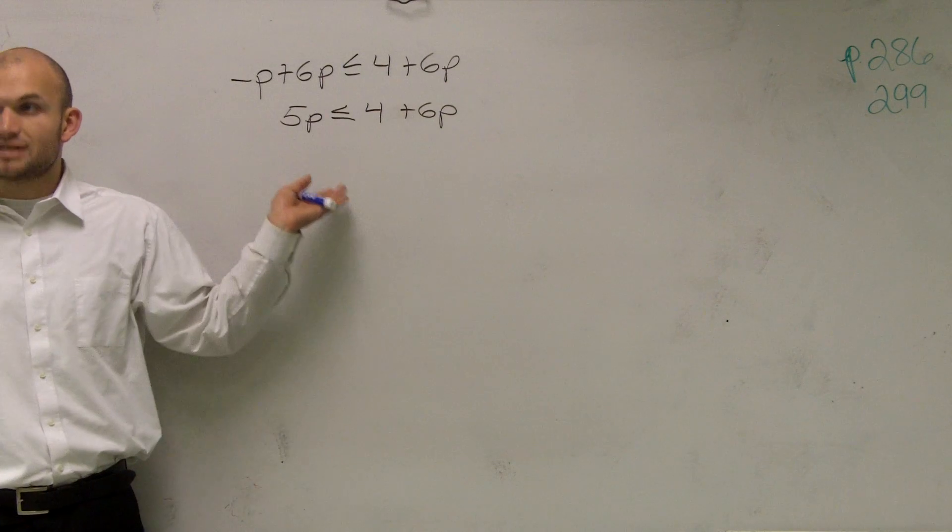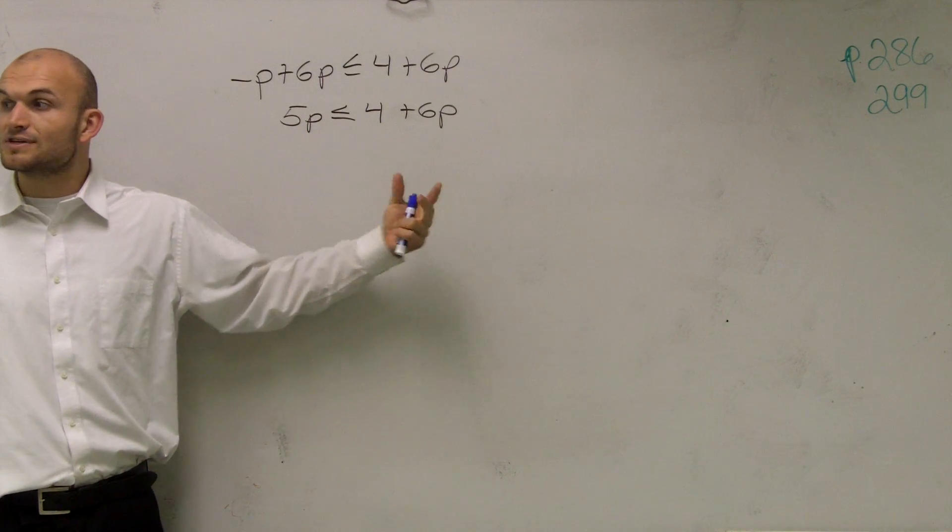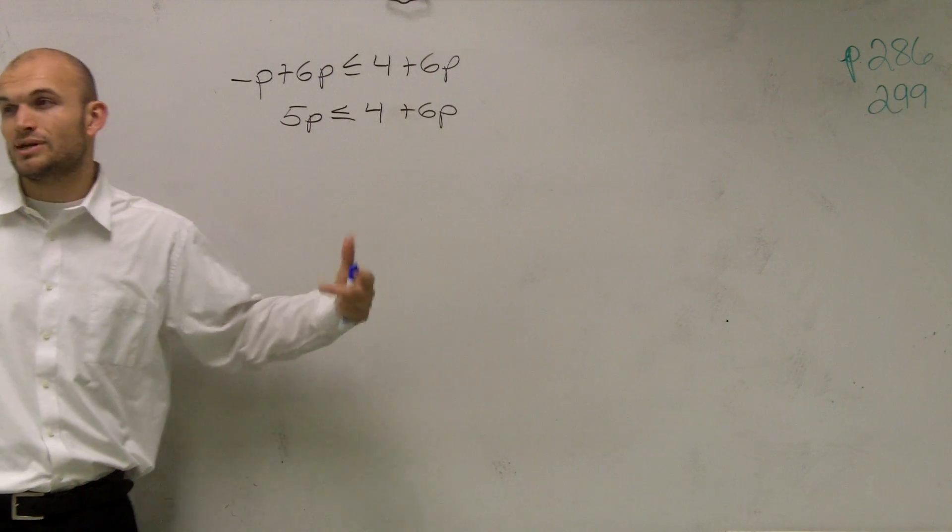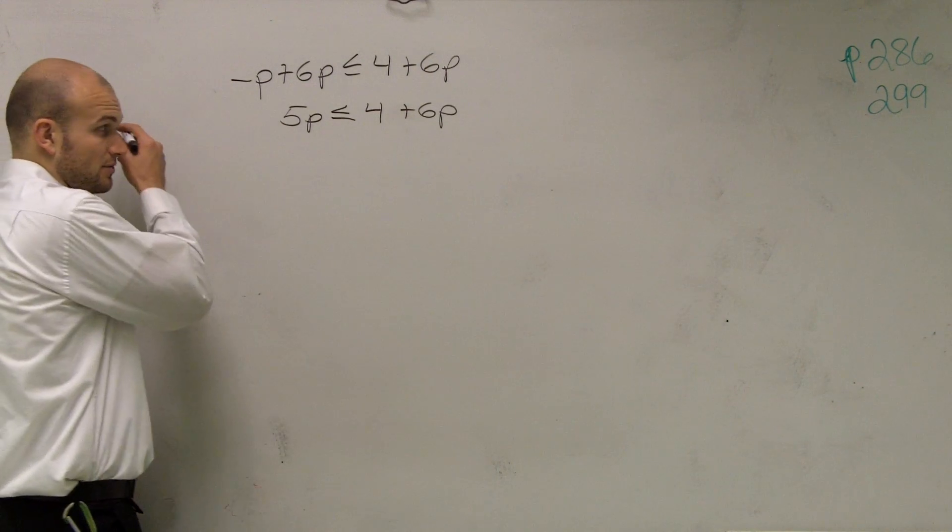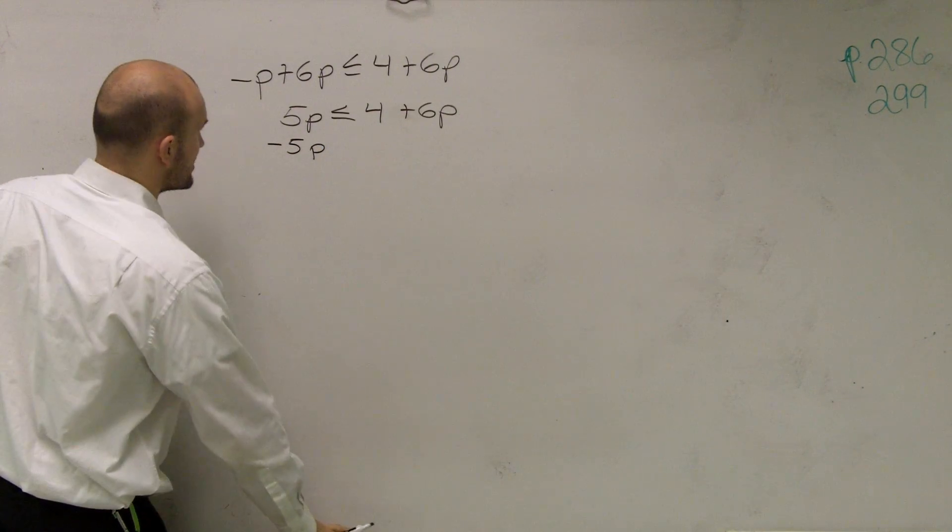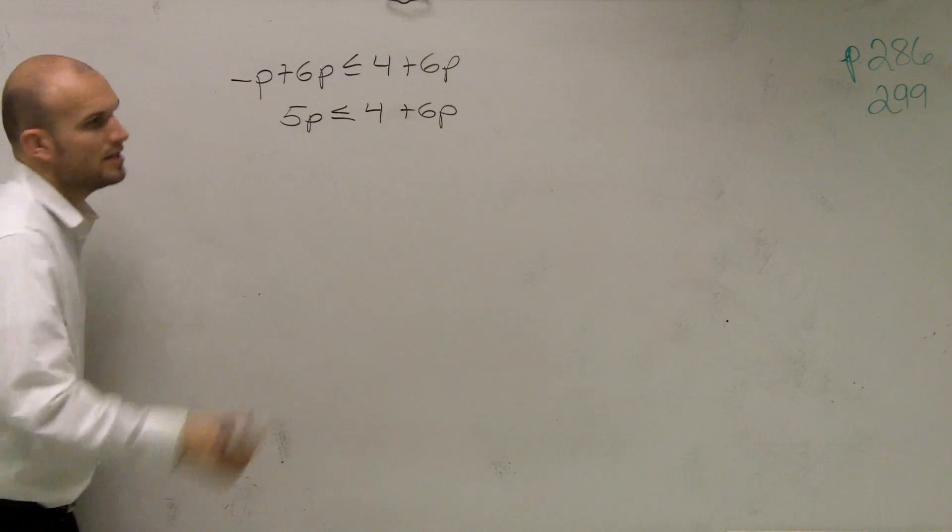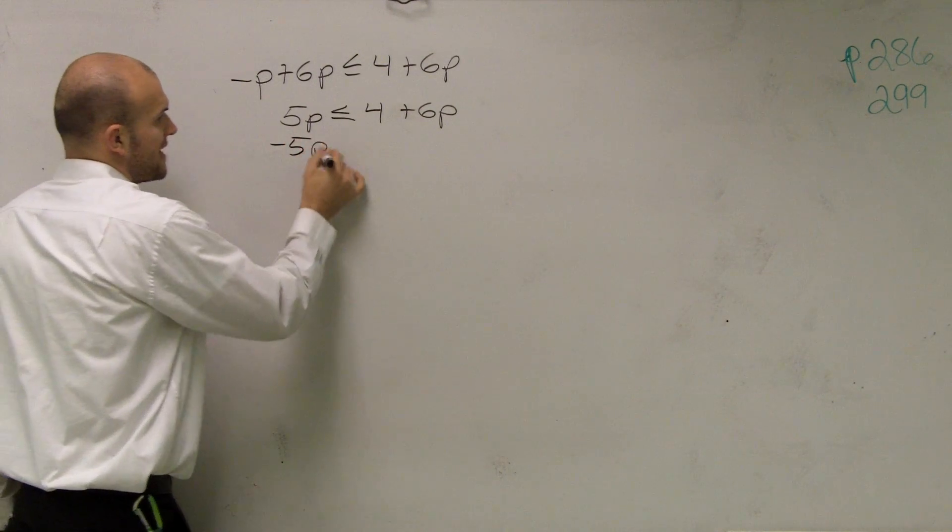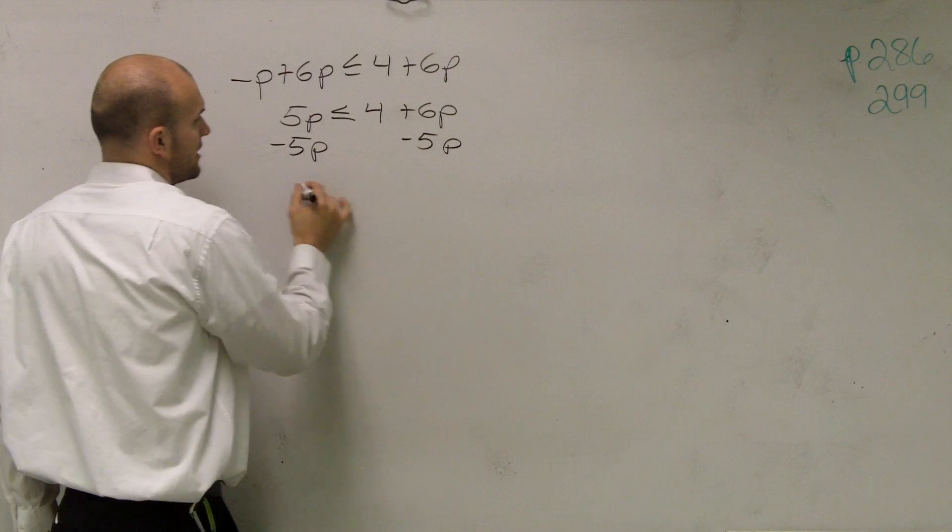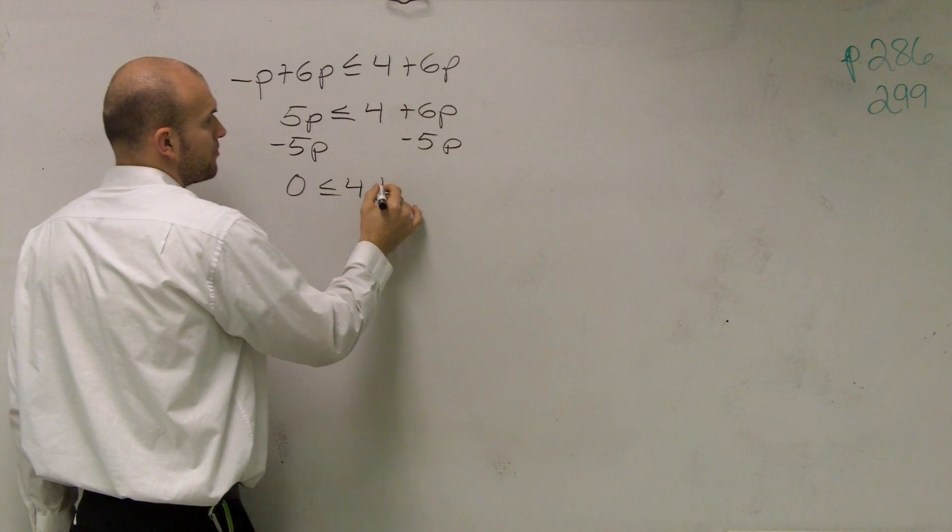Now, we have a variable on both sides. Remember, when we have a variable on both sides, we get rid of the smaller variable. It's just going to help you avoid negative numbers. So what we'll do is subtract 5p. And, you know what, in this case, actually I'm going to use a negative just to help us out. Actually, I'll do it both ways. So you subtract 5p, and you get 0 is less than or equal to 4 plus p.